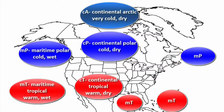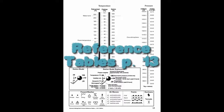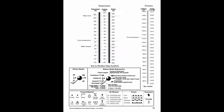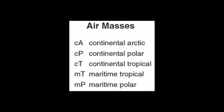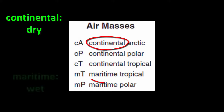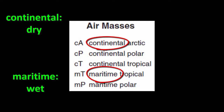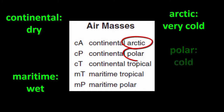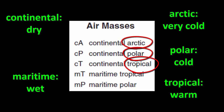You need to know the names, the map symbols, and the properties of all these air masses. The good news is that they're in your reference tables — on page 13 at the bottom in the center you'll see the air masses table with all the map symbols and names. Notice a pattern: the names all start with either continental or maritime and end with Arctic, polar, or tropical. If you know what all those words mean, you know what the air mass is like.